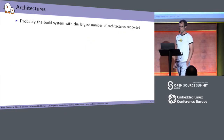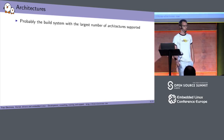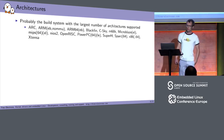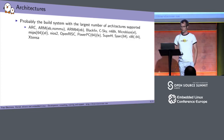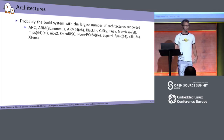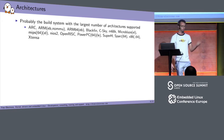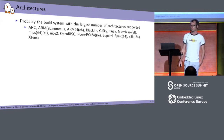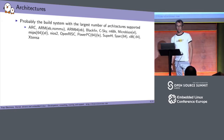On architecture support — I think, though I haven't checked, we're probably the build system supporting the largest number of architectures. Ranging from the well-known ones like ARM, x86, PowerPC, and MIPS, to more specialized architectures like Nios II, Microblaze, OpenRISC, ARC, SuperH, and a bunch of others. We have contributors interested in those more specialized architectures, which is a nice thing.